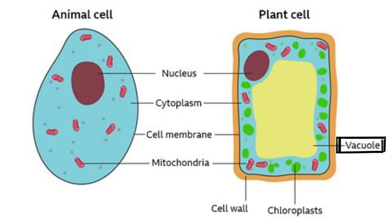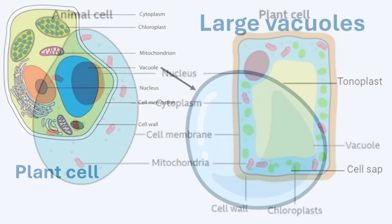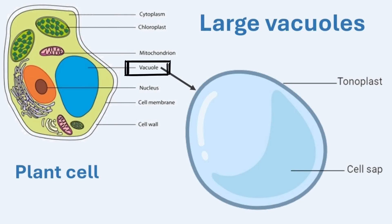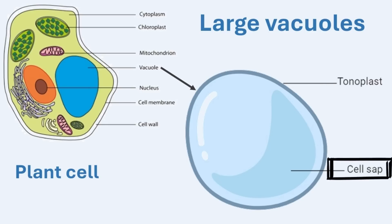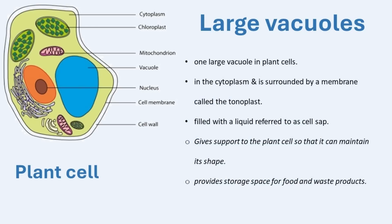Large vacuoles are important structures found in plant cells. Unlike animal cells, which may have small and temporary vacuoles or none at all, plant cells typically contain one large vacuole. This vacuole is a space in the cytoplasm enclosed by a membrane called the tonoplast and filled with cell sap — a liquid containing water, nutrients, and waste products. The main function of the vacuole is to support the plant cell, helping it maintain its shape, and it also acts as storage for food and waste materials. This large vacuole plays a crucial role in keeping the plant firm and upright, since plants do not have skeletons for support.